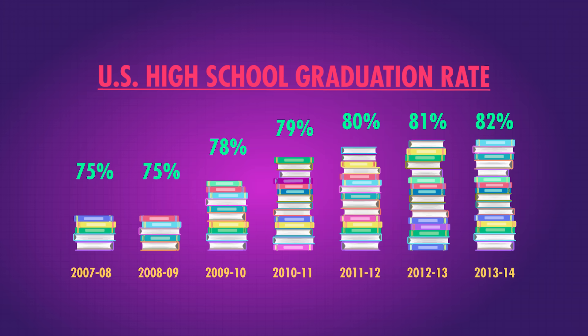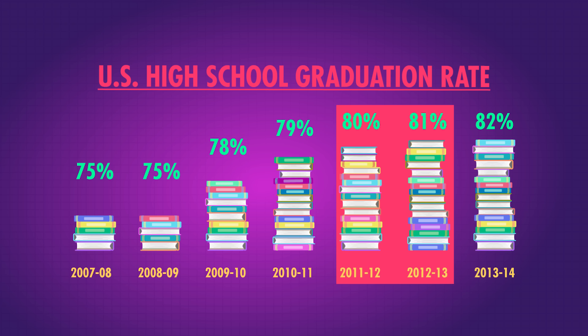That last pictograph was not at all to scale. See how the stacks of books are not proportionate? It shows a difference of 5% — from 75% to 80% — with a stack of books that is over double the height of the 75% stack. This makes the difference seem huge because the axis doesn't start at zero. And yet, an increase from 80% to 81% is shown by two stacks that are barely different in height, even though the 5% difference looks huge. Always keep an eye on those axes.